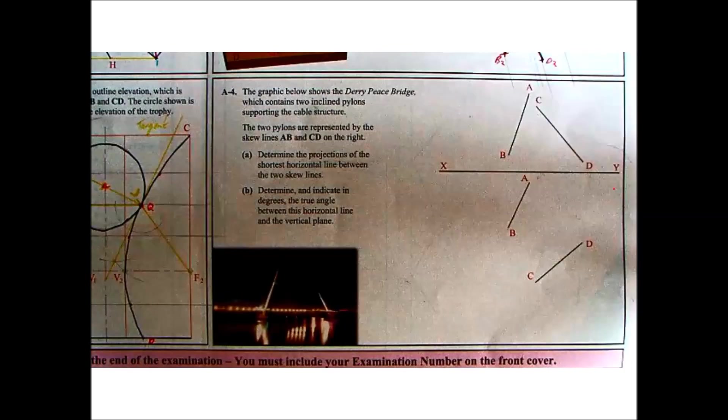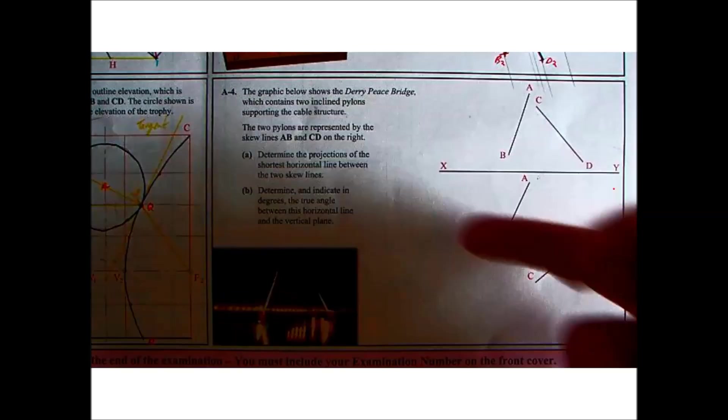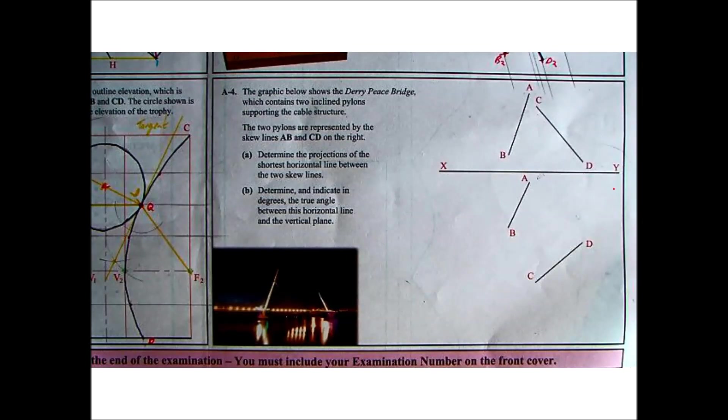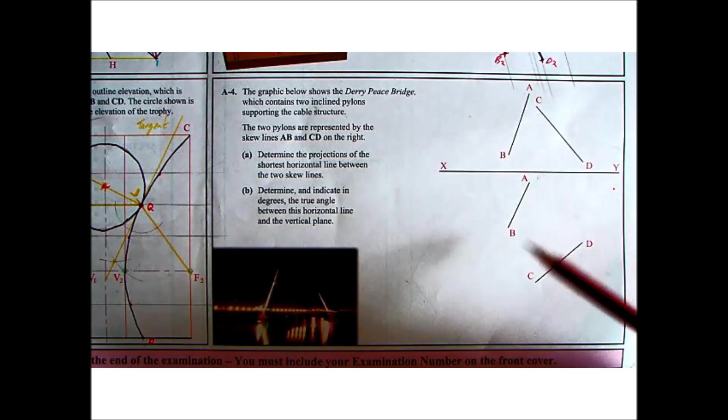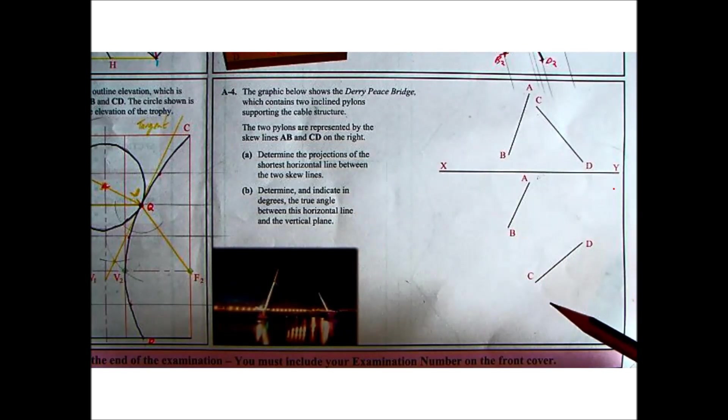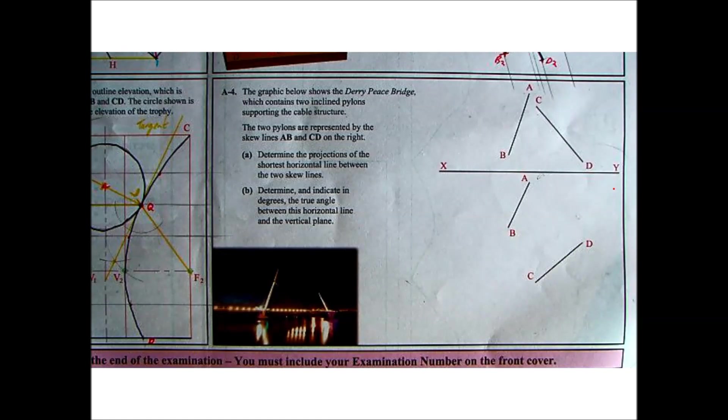Okay so skew lines question, nice to see it as a short question. So part A. We have our two skew lines here, AB and CD, plan elevation and determine the direction of the shortest horizontal line between the skew lines.